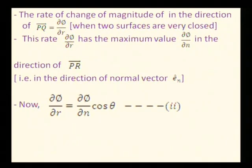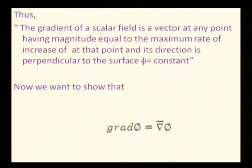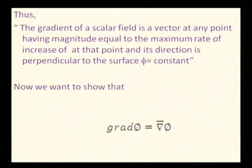Now we can see the definition of gradient. What is gradient? The gradient of a scalar field is a vector at any point having magnitude equal to the maximum rate of increase of φ at that point, and its direction is perpendicular to the surface φ equals constant. The gradient of a scalar field is a vector at any point having magnitude equal to the maximum rate of increase of φ — that scalar function — and that is nothing but the gradient at that point.